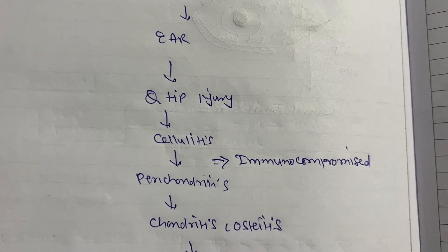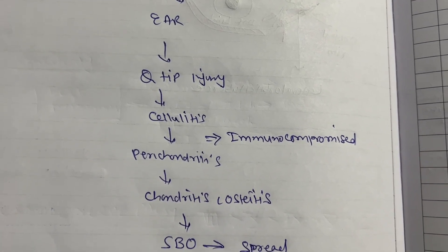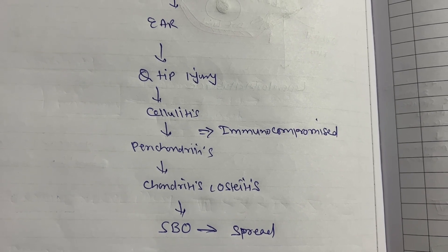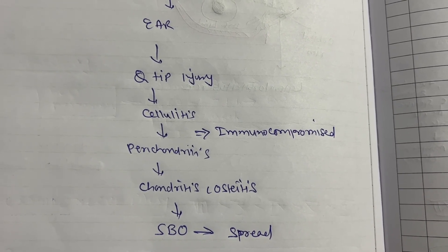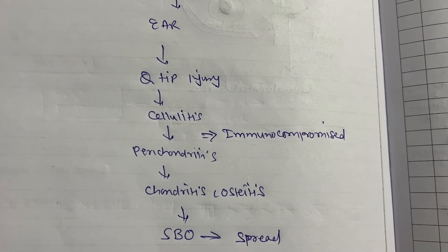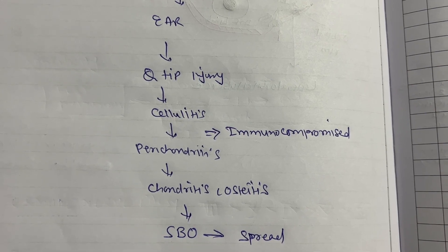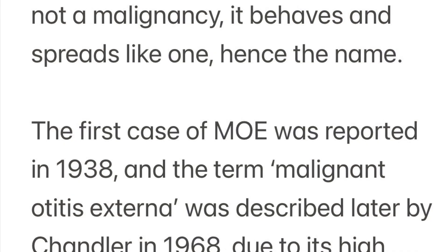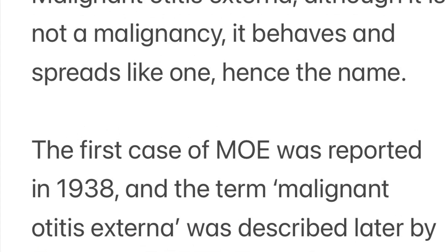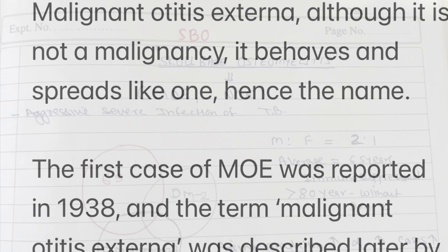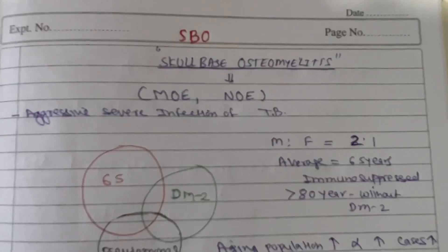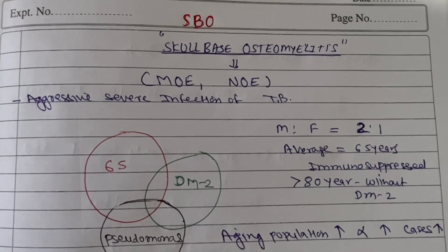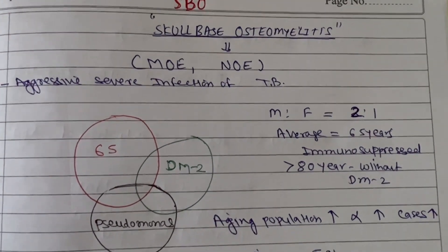The most common pathogenesis of ear osteomyelitis is Q-tip injury. If somebody is cleaning the ear, it leads to cellulitis, perichondritis, and periosteitis. Because of immunocompromise, it leads to spread, and due to aggressive behavior, it progresses to the term osteomyelitis or malignant otitis externa.